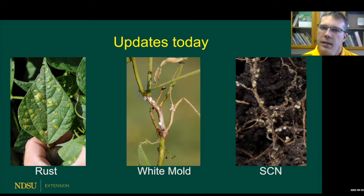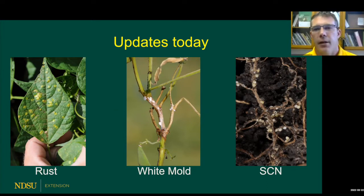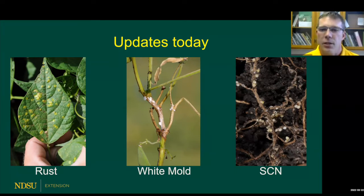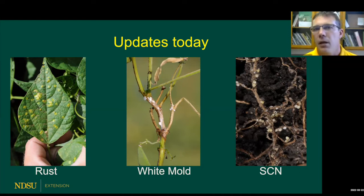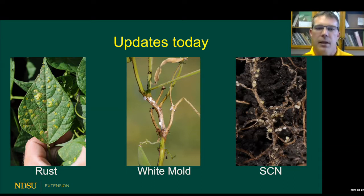Rust is important because it tends to be more common in warm, dry years. There's some really excellent work going on at the Carrington Research Extension Center for white mold — a lot of it with optimization, and I think that's maybe the most important thing I'm going to talk about today. I'll show you where to get more information, and with soybean cyst nematode there is some new information about the susceptibility of different market classes and some of the varieties that we grow.